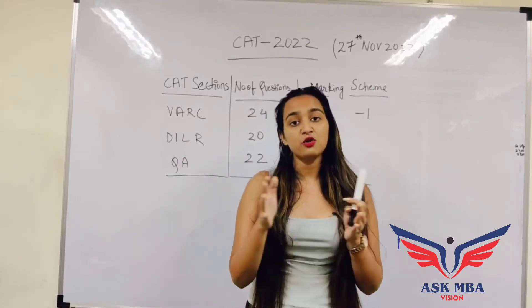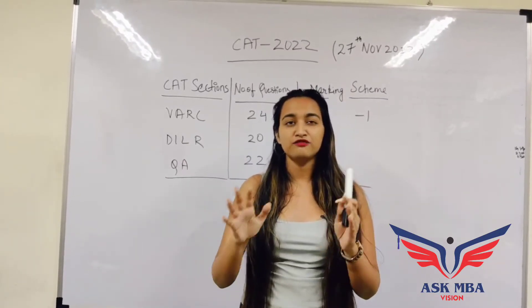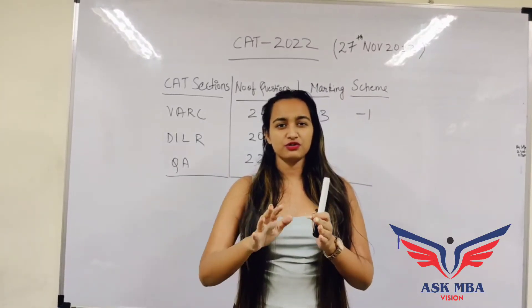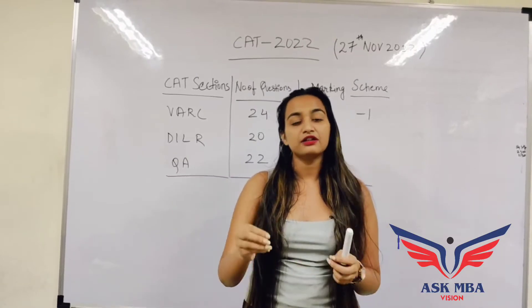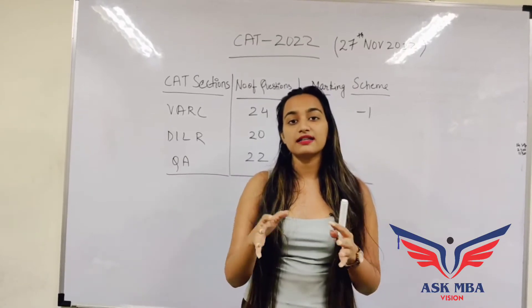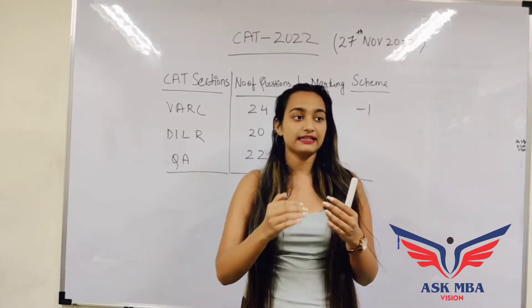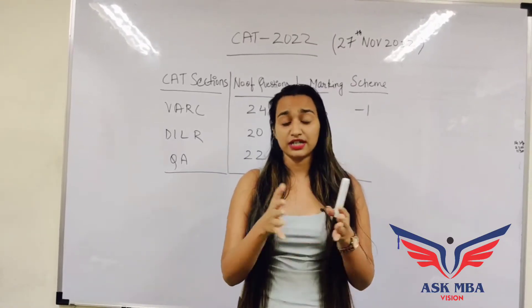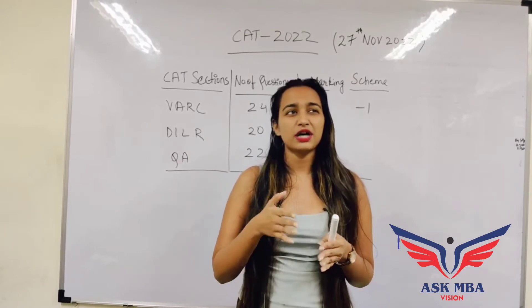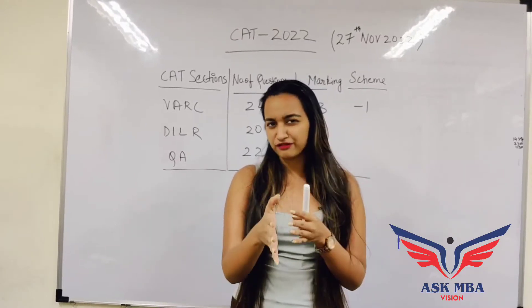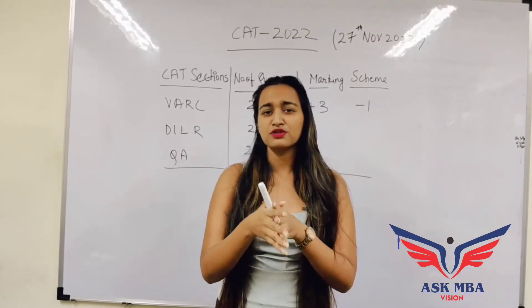Those who are in the open category, the form is going to cost you around 2300 rupees, and those who are in SC, ST, OBC or any other caste category, it's going to cost you 1150 rupees.